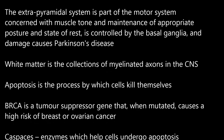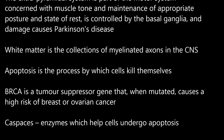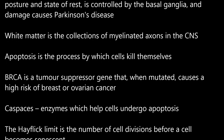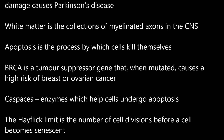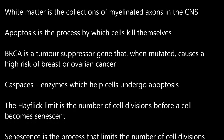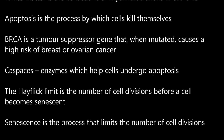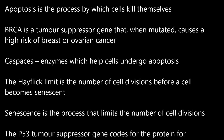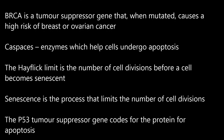White matter is the collection of myelinated axons in the CNS. Apoptosis is the process by which cells kill themselves. BRCA is a tumor suppressor gene that, when mutated, causes a high risk of breast or ovarian cancer. Caspases are enzymes which help cells undergo apoptosis.